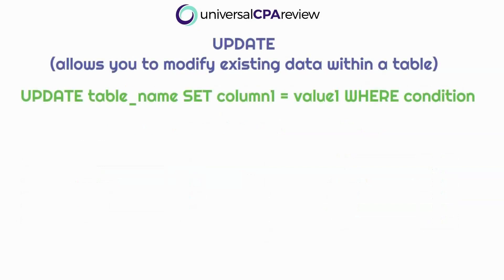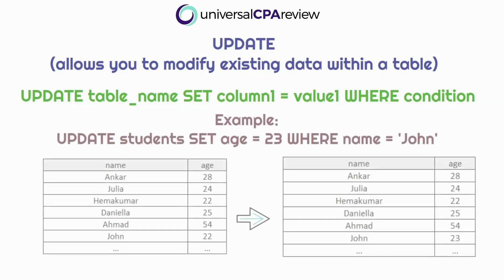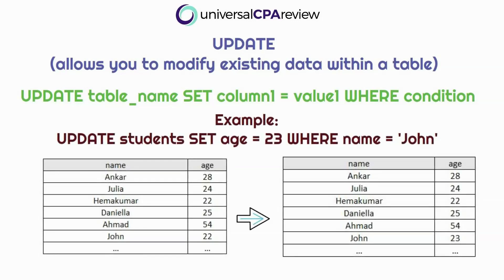Next we have the UPDATE command, which allows you to modify existing data within a table. Let's say John, the student we just inserted, has had a birthday and we need to update his age. We could use: UPDATE students SET age = 23 WHERE name = 'John'. This changes John's age from 22 to 23 in the students table. The WHERE clause we'll cover later — just know that UPDATE uses the column name and SET.